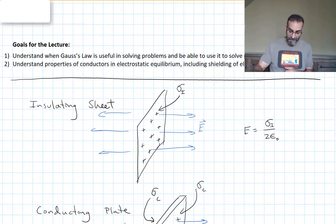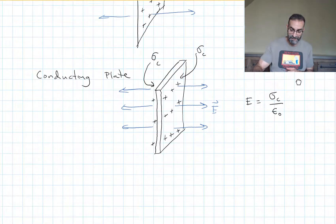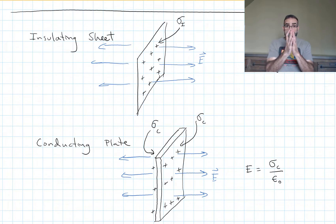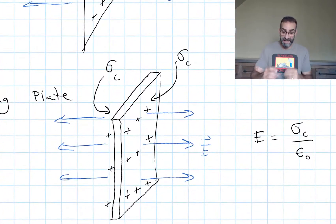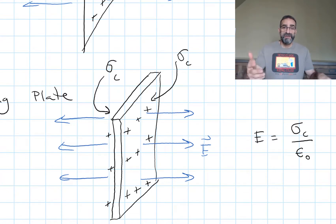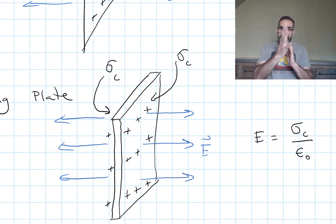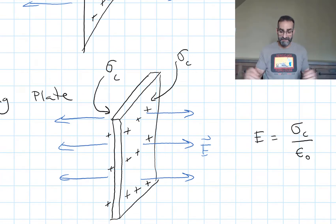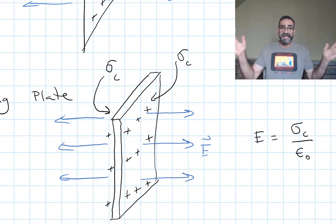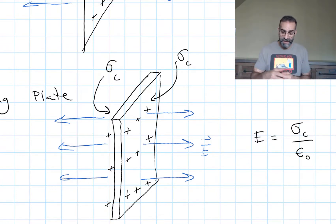If we do the same thing for a conductive sheet or plate, we put some charge on it and it immediately splits — half is on one face of the plate, half is on the other face. When we say sigma equals something, like four coulombs per square meter, we mean on only one face. The opposite face has the exact same charge if there are no other charges present. We can use Gauss's law and we get the electric field is sigma over epsilon naught.